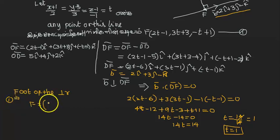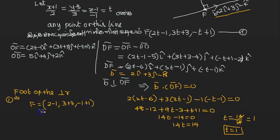t is equal to 1. 2 minus 1. This is 3 plus 3. It is equal to minus 1 plus 1. The foot of the perpendicular is equal to 1, 6, 0. It is equal to 1. This is the foot of the perpendicular. Here we have to be equal to 1.